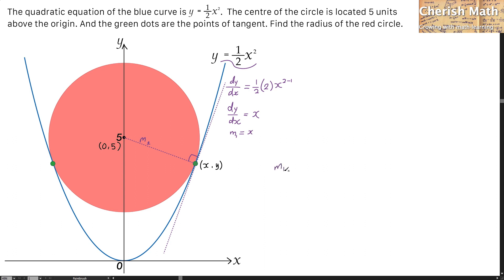I know that m1 times m2 is going to produce negative 1. So in order to get m2, I would just have to substitute the m1 here as the value of x that I got earlier. So now, what is the value of m2? That is negative 1 over x.